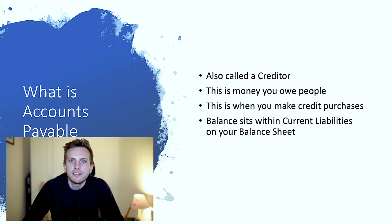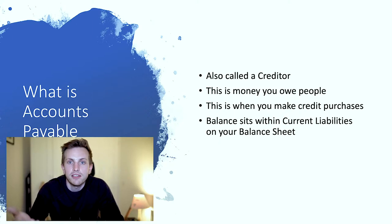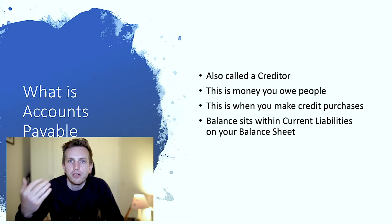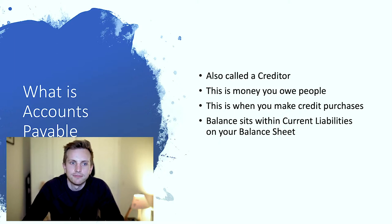An accounts payable position will also be called a creditor. This is money you owe to people. Often you don't buy things with cash — you buy on credit. Therefore, you've received the service or product that you've purchased, but you're yet to actually pay the person who provided that service. So you have to put on your balance sheet an accounts payable position, because that's the money you owe to somebody else.